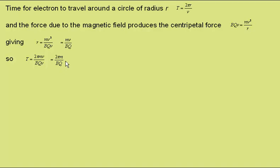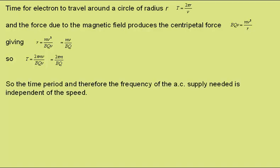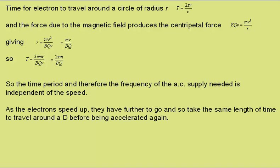This has no v term in, so the time period, and therefore the frequency of the AC supply needed for the cyclotron, is independent of the speed of the particles. As the electrons speed up they have further to go, and so they take the same length of time to travel around a d before entering a gap and being accelerated again.